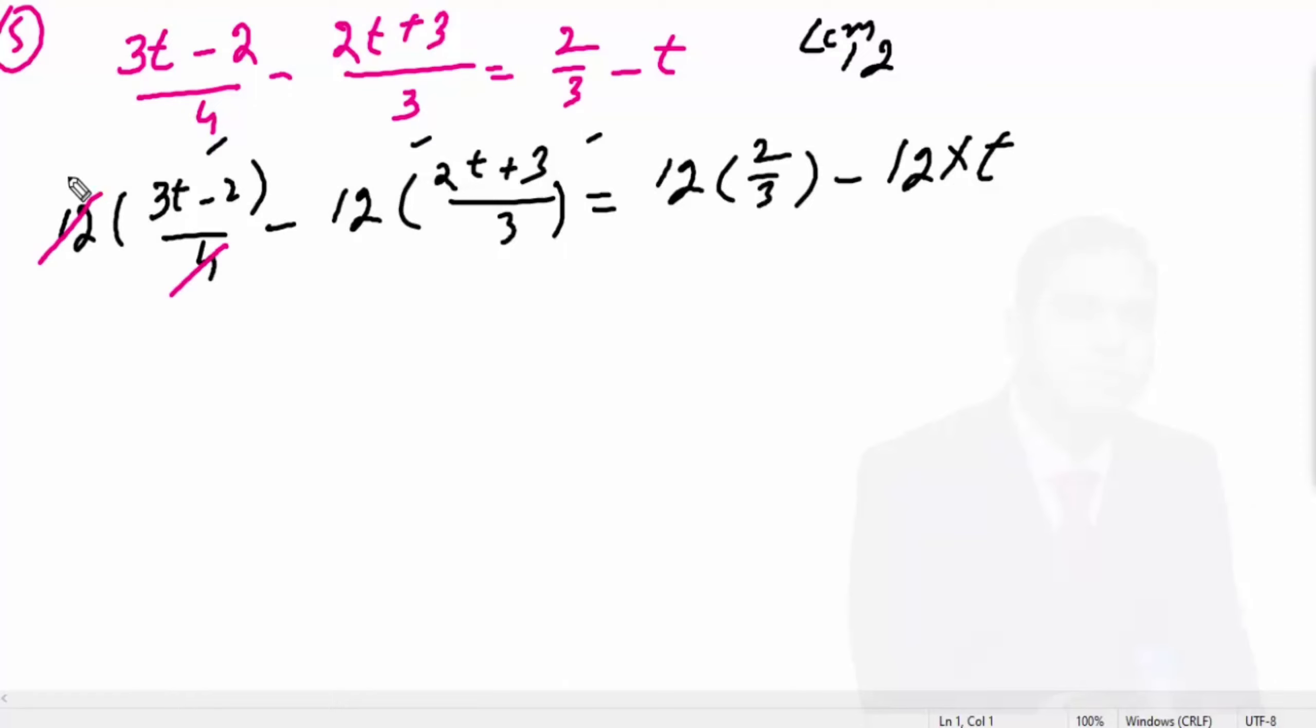So 3 into 3t minus 2 minus 4 into 2t plus 3 is equal to 8 minus 12t.